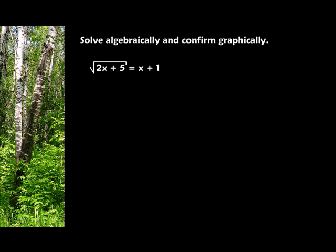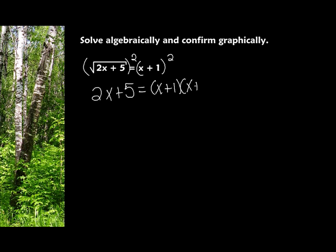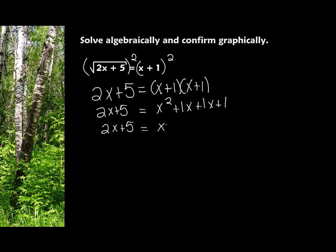Solve algebraically and confirm graphically. What I'm going to do is solve this equation using algebra, then take out my calculator and show you how we can solve it using the graphing function. When I have a square root, I need to square both sides. Squaring gets rid of the square root. So we'll have 2x plus 5 on the left side. On the right side, I'm squaring, so that means x plus 1 times x plus 1. Now we need to do FOIL, which gives me x squared plus 1x plus 1x plus 1. I still have 2x plus 5 on the left side, and when I simplify the right side, I'll have x squared plus 2x plus 1. Now I want it equal to 0.